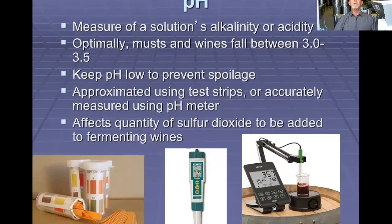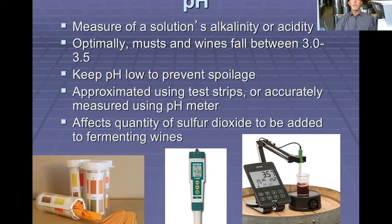pH is a measure of the hydrogen ion concentration — the acidity of a solution. Alkalinity is the opposite, measuring the hydroxyls in the solution. Optimally, we would like our must to be between pH 3.0 and 3.5. You want to keep your pH low to prevent bacterial spoilage, as bacteria cannot grow in solutions that acidic. However, once you reach a pH of about 4.0, you can get bacterial infections in your wine. So we try to keep pH ideally around 3.5 or a little below. You can approximate pH with test strips, but it's much more accurate to use a pH meter. The pH affects the quantity of sulfur dioxide needed to add to your fermenting wines to produce the antibacterial and antioxidant activities desired.